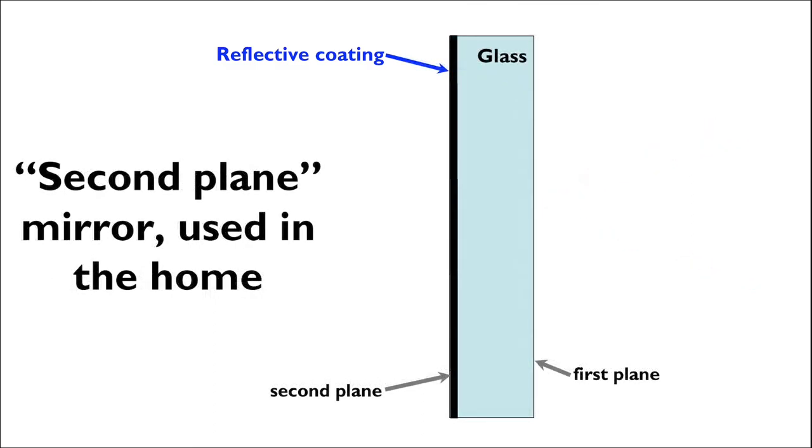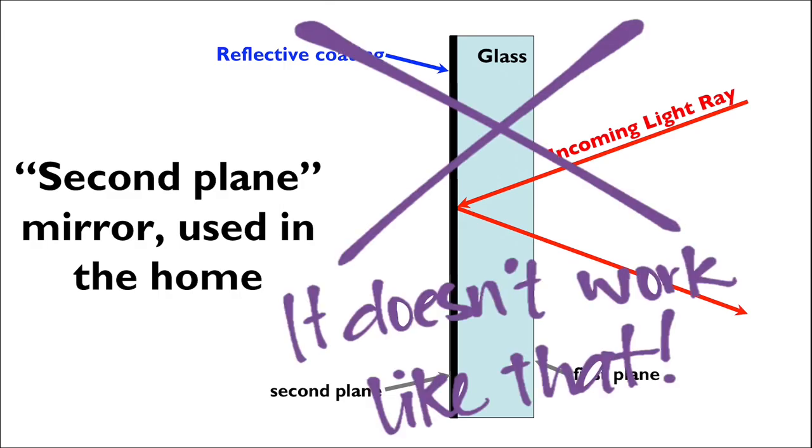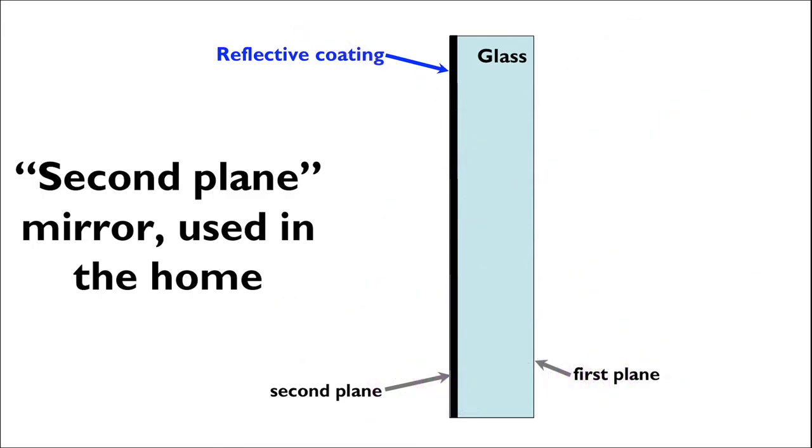In a second plane mirror, like the ones we use in the house, light approaches the mirror from the uncoated side, meaning that it must pass through the glass to reach the reflective coating in the back. But it doesn't work like this. Instead, this is what actually happens. The light gets refracted, and not once, but twice. First as it enters the glass, and then again when it's leaving the glass after being reflected off the coating in the back.